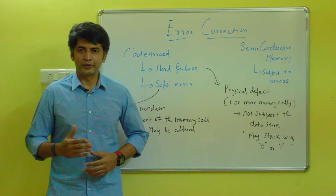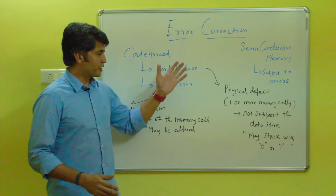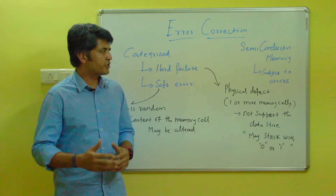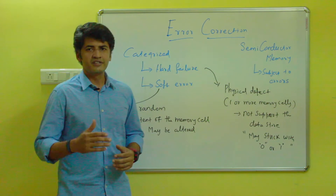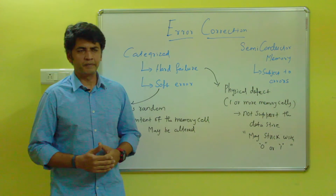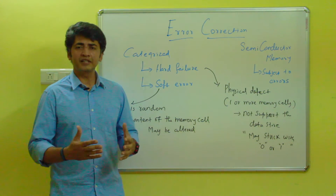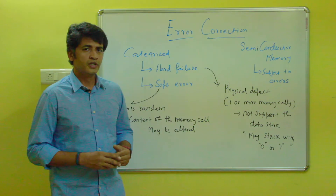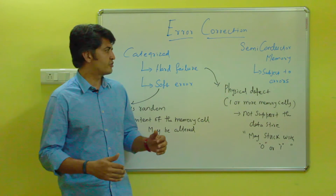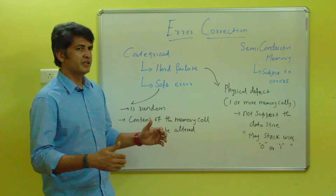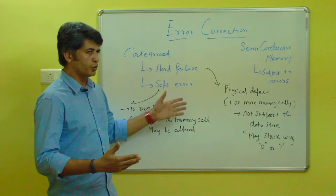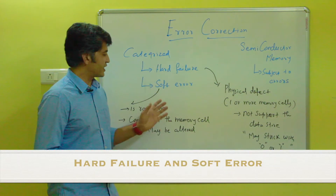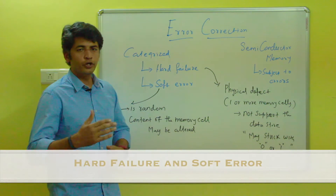In this video we are going to see what is error correction. Error correction comes under semiconductor memory, as semiconductor memory is subject to errors. We are categorizing the errors into two types: one is hard failure and the second one is soft error.